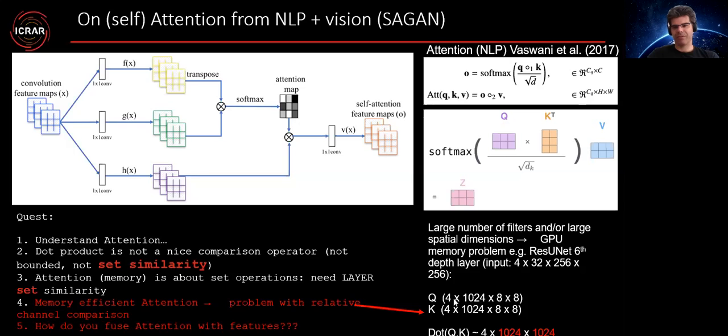And the last observation we need to make is like how do we use attention with features? Here's an example of why this is problematic when we use this definition, for example, from the self-attention GAN paper on images. Like when we increase the number of features, say it's 1024, the dot product between queries and keys produces a layer which is very large to be fit into the memory of the GPU. So this is one important problem to solve.